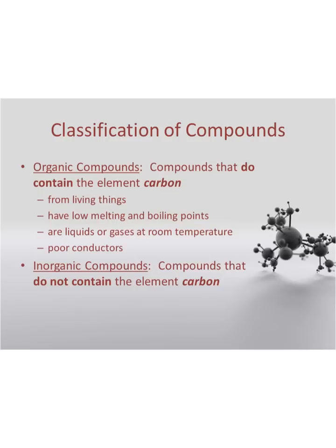We can break down compounds further into two different classes. One type is called organic, which is any compound that has the element carbon somewhere in its formula. Organic compounds typically come from things that were living at one time, have low melting and boiling points, are often found as liquids or gases at room temperature, and don't conduct electricity or heat well — they're better insulators than conductors. Anything that does not contain the element carbon is considered an inorganic compound; the prefix 'in' just means not.